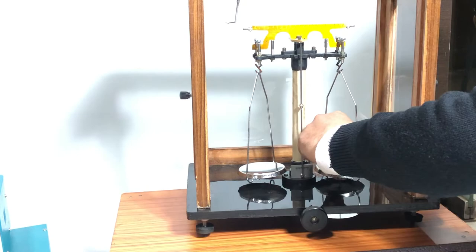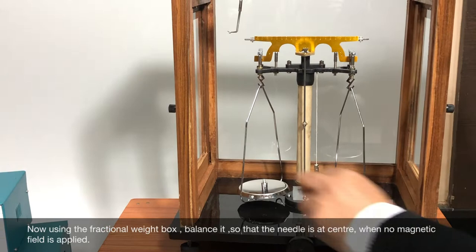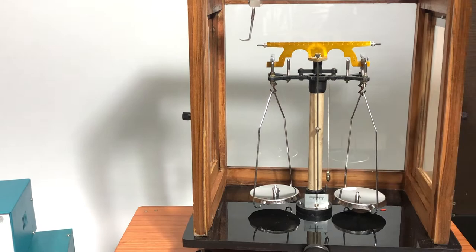Now using the fractional weight box, balance it so that the needle is at center when no magnetic field is applied.